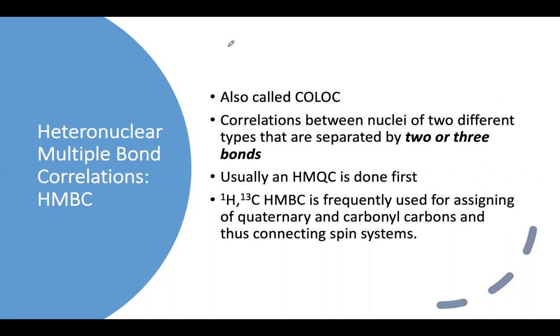So in shorthand, that's H and C correlations, heteronuclear. It can be other nuclei, but for this video we're looking at proton carbon. HMQC is one bond, the proton that's bonded to that carbon. HMBC is H, C, and it's usually two or three bond coupling.